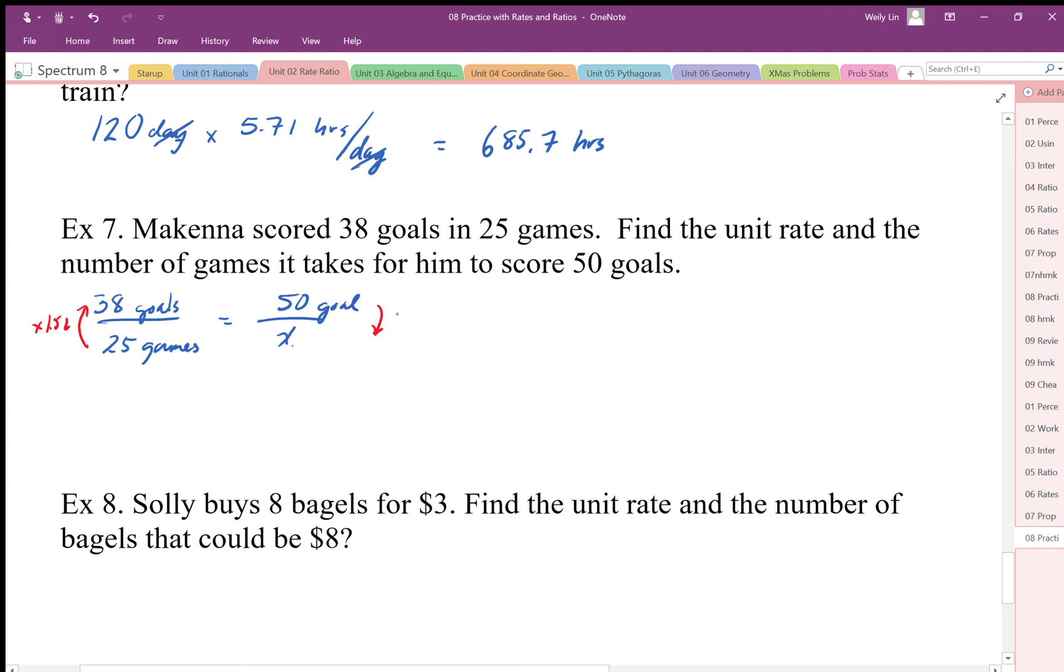I'm going to divide by that because I'm going in the other direction, and that direction of that multiplier is very important. So we're going to do 50 divided by 1.52, and we're going to end up with 32.9 games, so about 33 games.